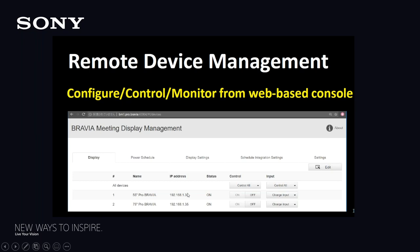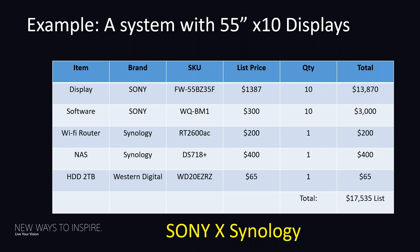This system diagram shows a Bravia Meeting server somewhere on the network, a Wi-Fi router allowing devices to wirelessly share content to the displays, and displays across three different rooms. The management console shows two displays on the network with their IP addresses, status checks, individual or group control, and remote input changes. An example system using 10 55-inch BZ35F displays with the $300 software license per display and a Synology NAS totals around $17,000.